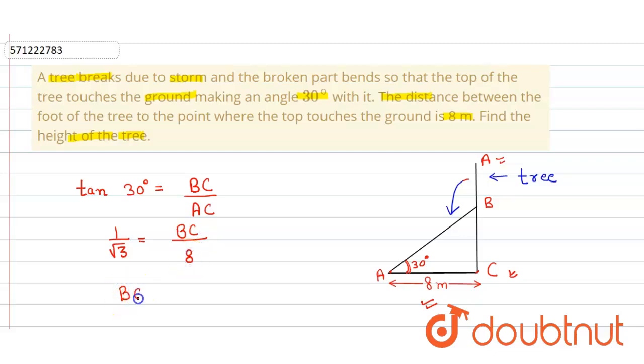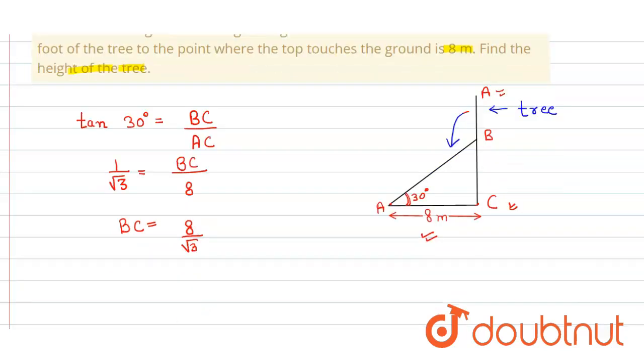So the value of BC is equal to 8 divided by root 3. But we have to also find the value of AB in order to find the complete length of the tree.